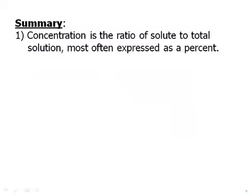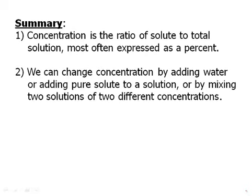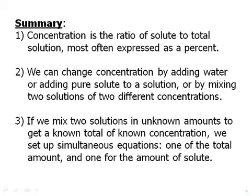Concentration is the ratio of solute to the total solution most often expressed as a percent. And here, of course, we have to be very fluent in going back and forth between percents and decimals. We can change concentration by adding water, or adding pure solute to a solution, or by mixing two solutions of two different concentrations. If we mix two solutions in unknown amounts to get a known total of a known concentration, we set up simultaneous equations. One equation is the total amount equation, and the other equation is for the amount of solute.